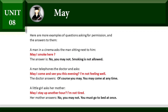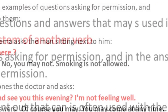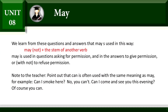A little girl asks her mother: 'May I stay up another hour? I am not tired.' Her mother answers: 'No, you may not. You must go to bed at once.' We learn from these questions and answers that may is used with the stem of another verb — may is used in questions asking for permission and in the answers to give permission, or with not to refuse permission.